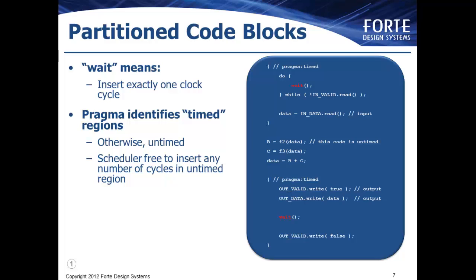In this example, the pragmas define that the wait statements imply exactly one clock cycle, and any code outside of these blocks is completely untimed, and thus the scheduler is free to do what it wants. In this case, the arithmetic operations will be restricted to occur between the timed blocks. This is better than super-state wait, since the scheduler is free to schedule the untimed code more freely.